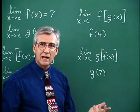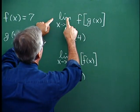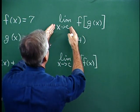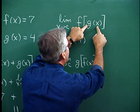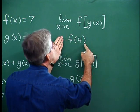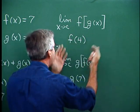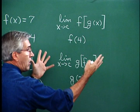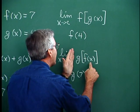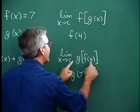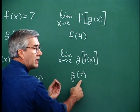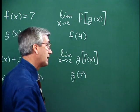What about the composition? The limit of f of g of x: we apply the limit idea to g of x, and the limit of g of x was 4, so this is nothing but f of 4. Evaluate that and we resolve the situation. If it was g of f of x, we know the limit of f of x is 7, so this is just g of 7. All of this is relatively intuitive.